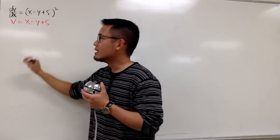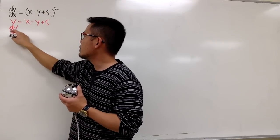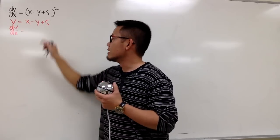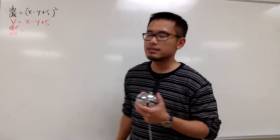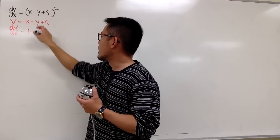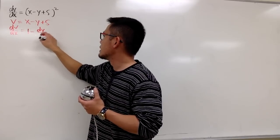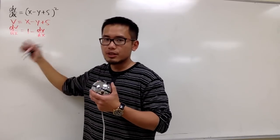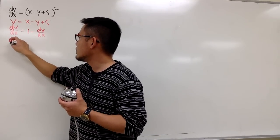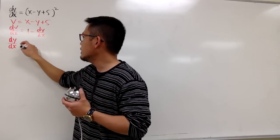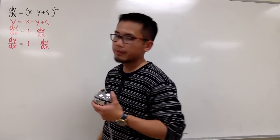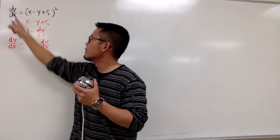Here's the punchline. Let's go ahead and differentiate both sides. Once I include the plus 5 here, it doesn't really matter because the derivative of 5 is going to be 0 anyway. The derivative of x is 1, and then minus the derivative of y is just dy/dx. Now let me move things around — move this to the left-hand side and this to the right-hand side, so we have dy/dx equals 1 minus dv/dx.